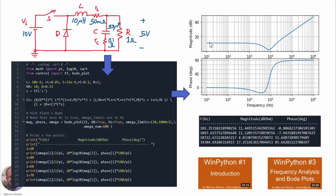We have the magnitude of the input impedance starting with a given value and tending to infinite, and this is the phase of the input impedance. Here is the output corresponding to different points at different frequencies — this is the magnitude and this is the phase. We have used WinPython as usual. If you are not familiar with this program, take a look at the WinPython videos: number one, introduction, and number three, frequency analysis and Bode plots.